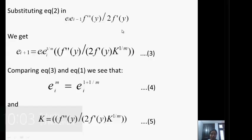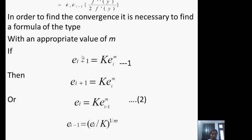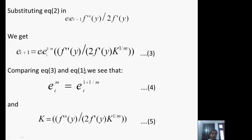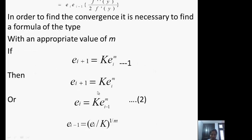Comparing equation 3 and equation 1 we see that e_i^m = e_i^{1+1/m} and K = (f''(y) / (2 f'(y)) K^{1/m}).